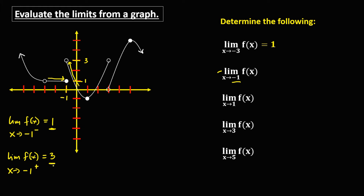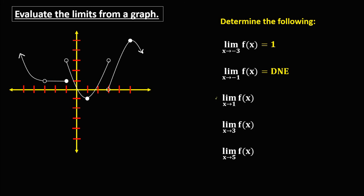Since the left side limit is not equal to the right side limit, therefore the limit of f of x as x approaches negative 1 does not exist.